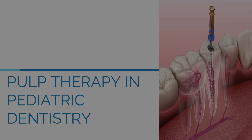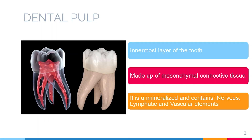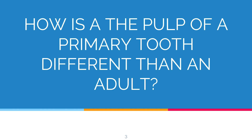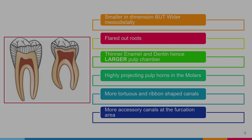So, pulp as we all know is the innermost layer of the tooth. It is the mesenchymal connective tissue — it is unmineralized and contains the vascular, lymphatic, and nervous tissue elements of the tooth. The main question that pops up in pediatrics is: how is the pulp of deciduous teeth different from that of adult teeth?